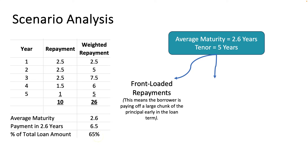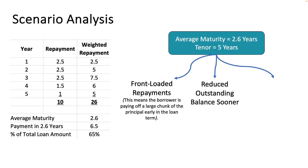The impact of front-loaded repayment is a reduced outstanding balance sooner. Because in three years substantial loan is repaid, the outstanding comes down faster. This means shorter average exposure for the lender — even though the loan is for five years, the average maturity is 2.6 where substantial amounts are already recovered.